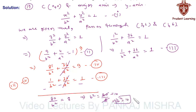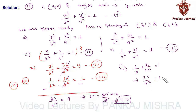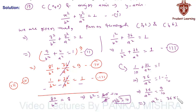Substituting the value of b² in equation 3: 1 over 10 plus 36 over a² equals 1. This implies 36 over a² equals 1 minus 1 over 10, which is 9 over 10. Therefore a² equals 36 times 10 over 9. Since 9 fours are 36, we get a² equals 40.